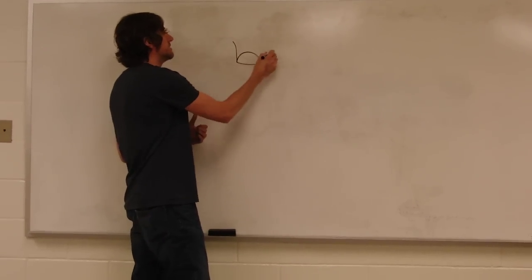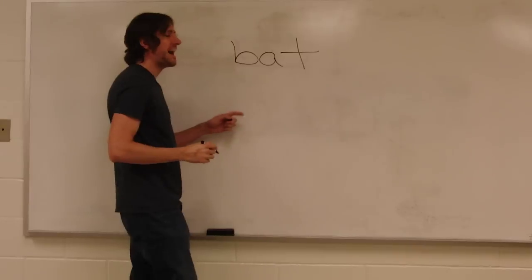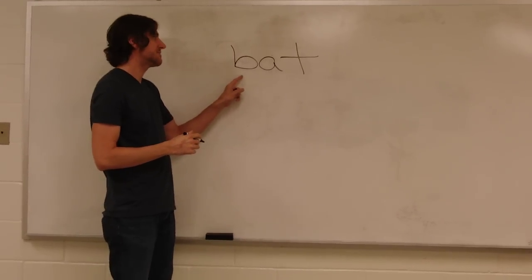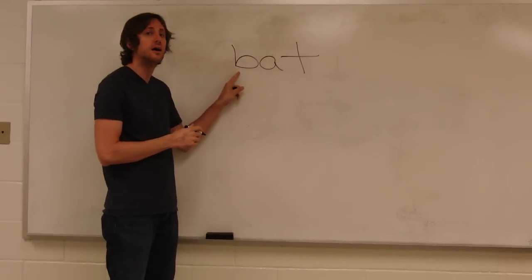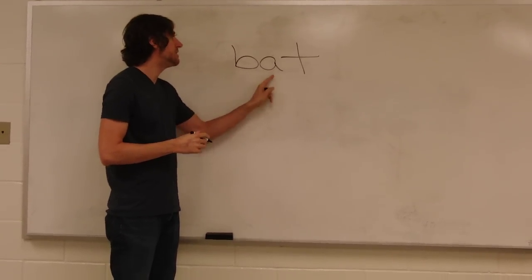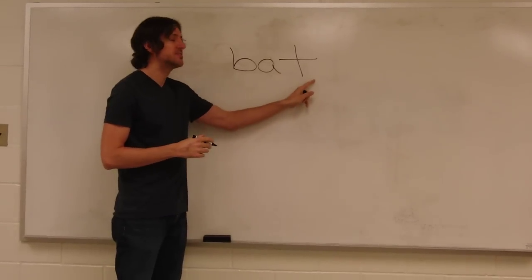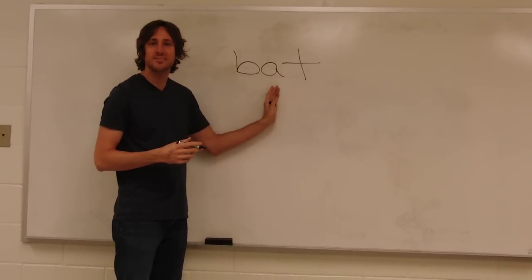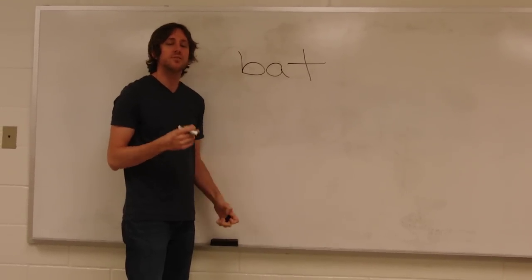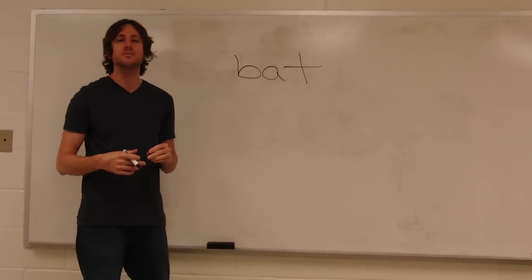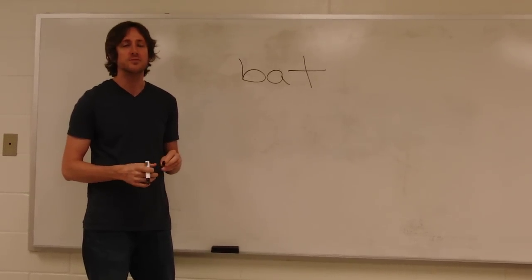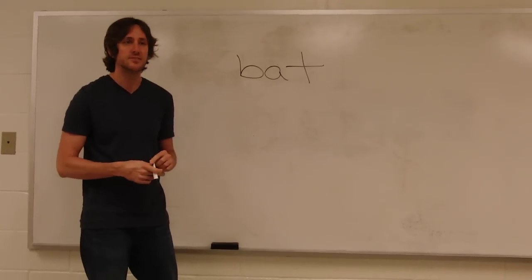So if I had a word like bat, if I'm decoding it one sound at a time, I would say b. If B says buh, it'd be buh, ah, tuh, buh, ah, tuh. And we know, of course, that does not say buh, ah, tuh, it's bat. So that's one thing that you want to be very careful of when you're teaching individual letter sounds. You don't want to put the uh sound at the end.